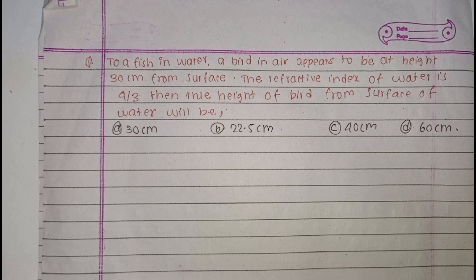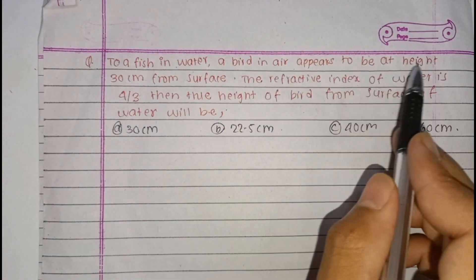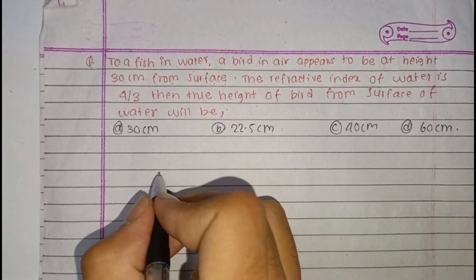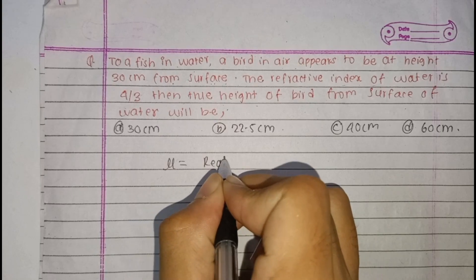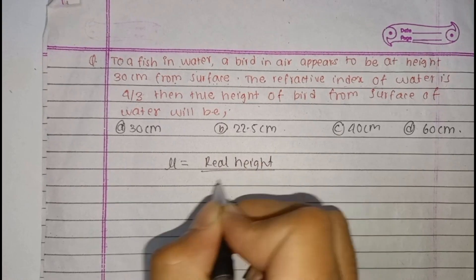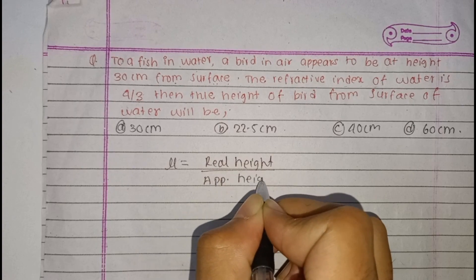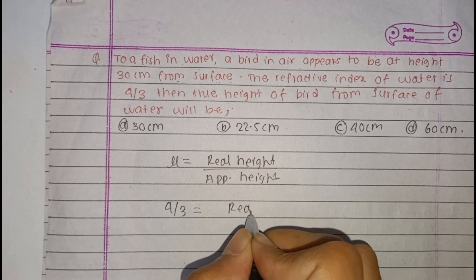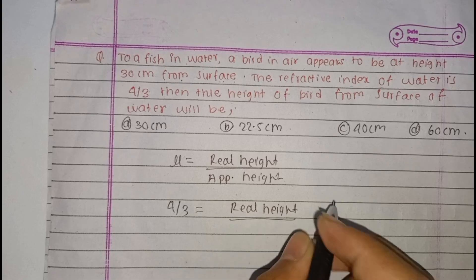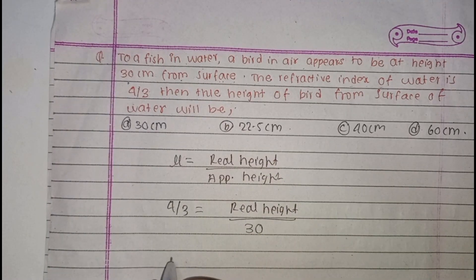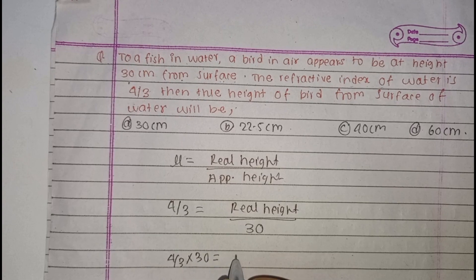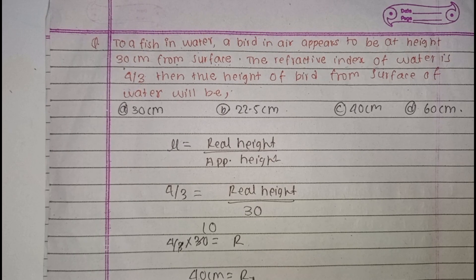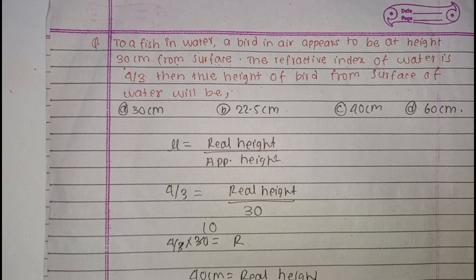The lateral shift is 2.1 cm. A fish in water and a bird in air: the apparent height from the surface is 30 cm and the refractive index of water is 4 by 3. Using mu equals real height divided by apparent height: 4 by 3 equals real height divided by 30 cm, so real height equals 40 cm. The answer is option C.